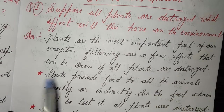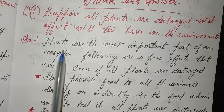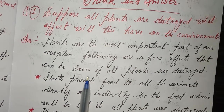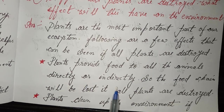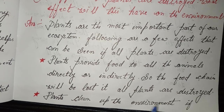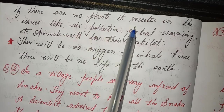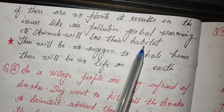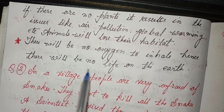Think and answer. First: Suppose all plants are destroyed — what effect will this have on the environment? Answer: Plants are the most important part of our ecosystem. If all plants are destroyed: first, plants provide food to all animals directly or indirectly, so the food chain will be lost. Plants clean up the environment; without them, issues like air pollution and global warming will result, and animals will lose their habitat.